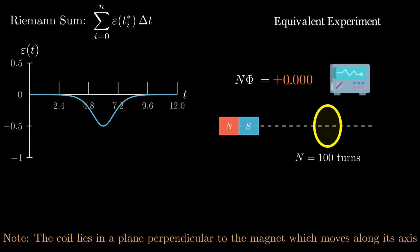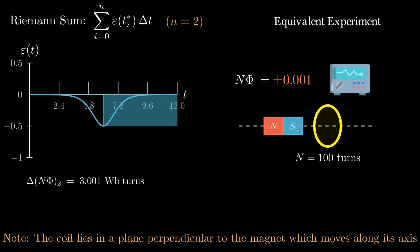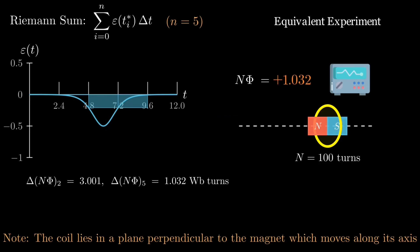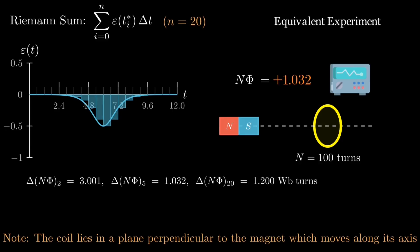Again, we partition time and add up the contributions, but with a crucial physical sign. Each slice contributes minus epsilon of t times delta t, so the left Riemann sum gives a running estimate of delta N phi.